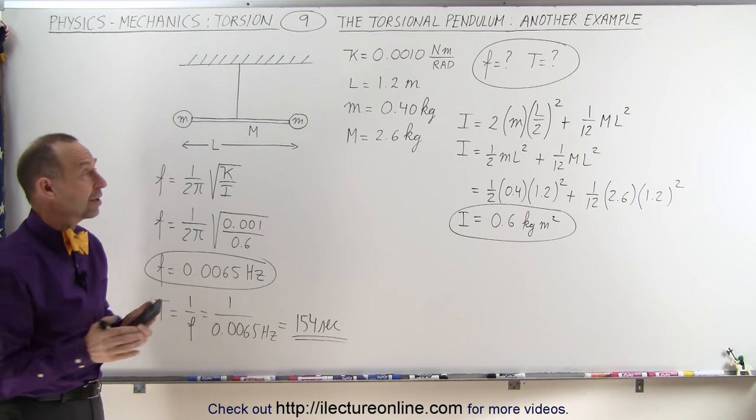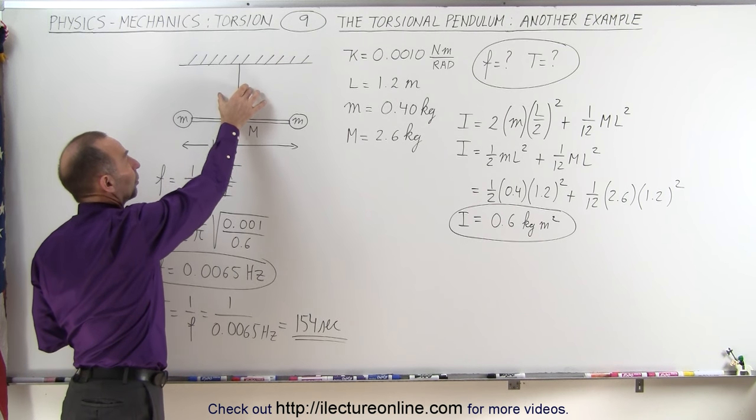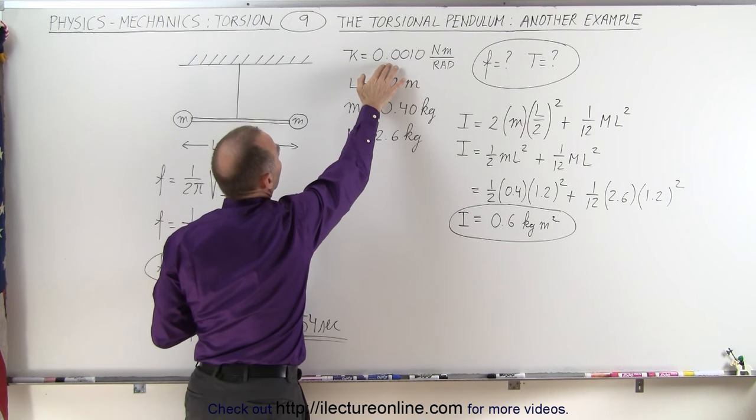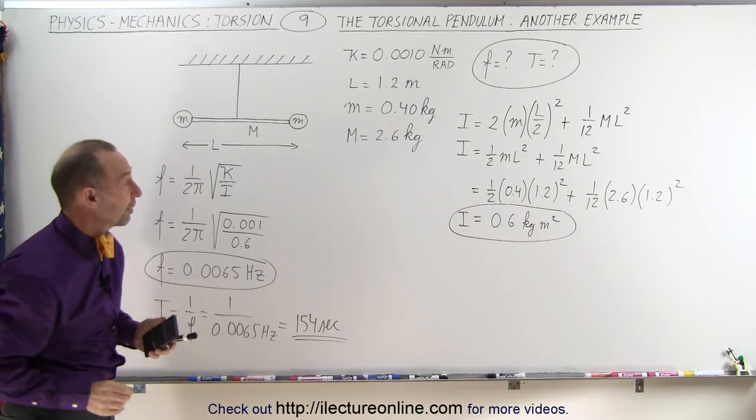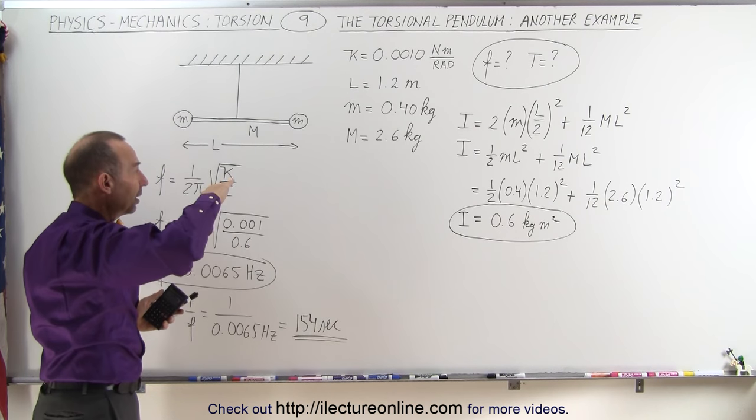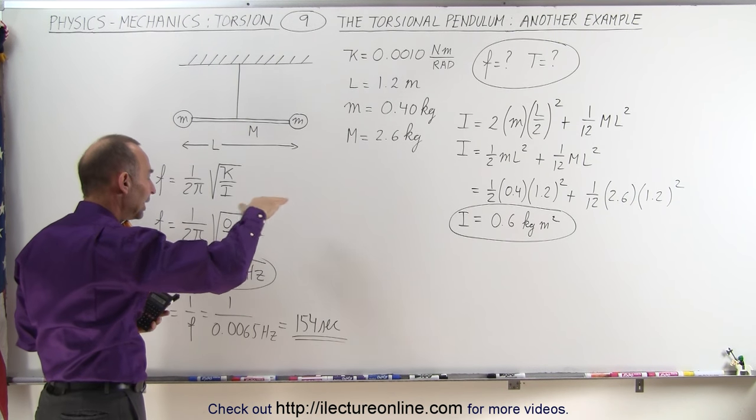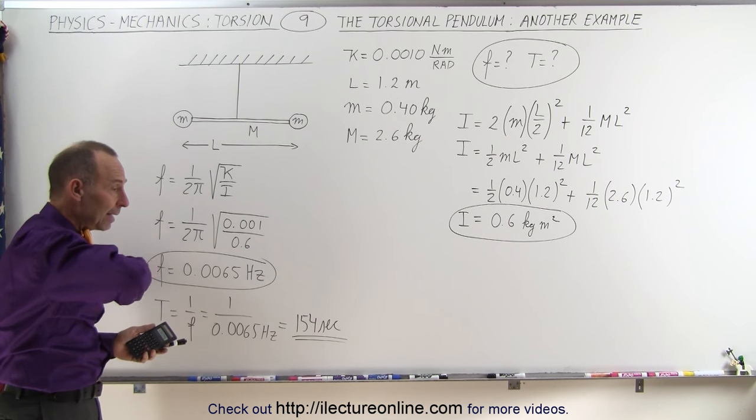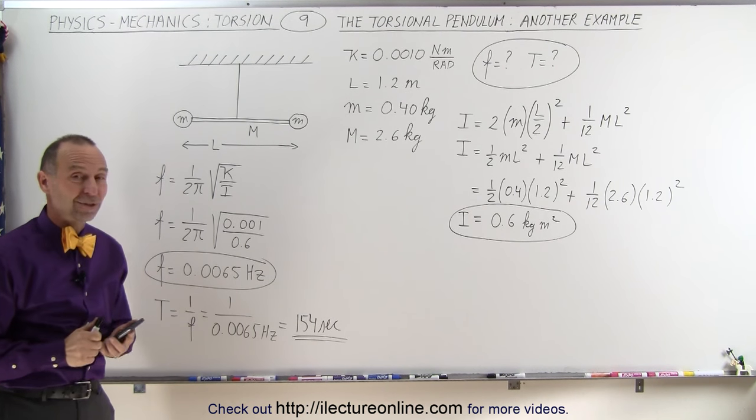Now that's of course a very long time. Assuming we have a wire with a torsional constant of 0.001 newton meters per radian, which is fairly small, and we set this pendulum in motion, it will swing back and forth very slowly. It will take a complete 154 seconds, which is about two and a half minutes, for it to go back and forth one single time. And that's how it's done.